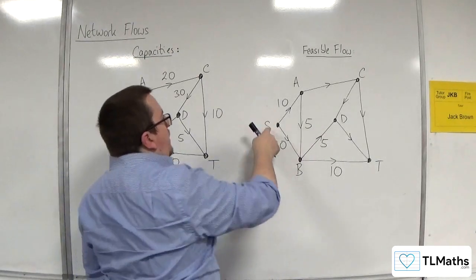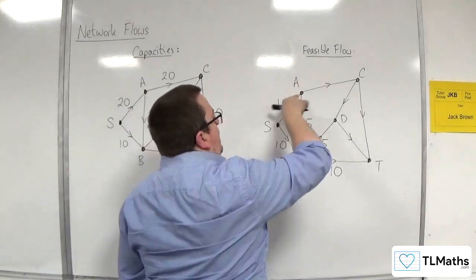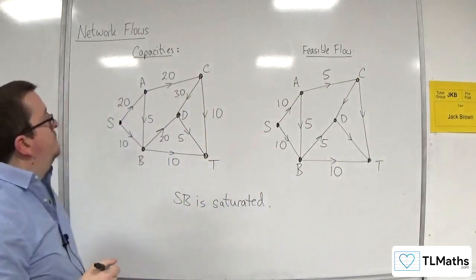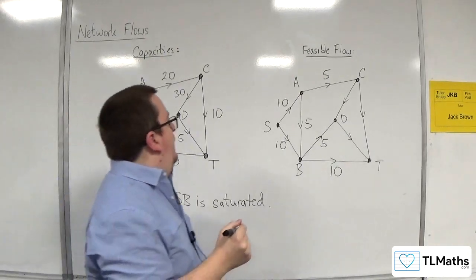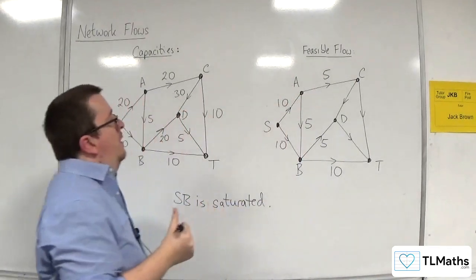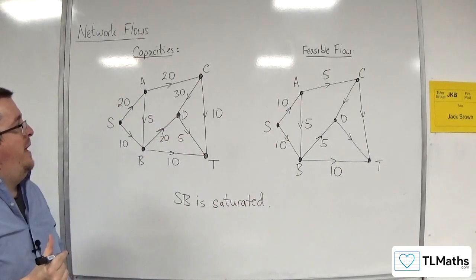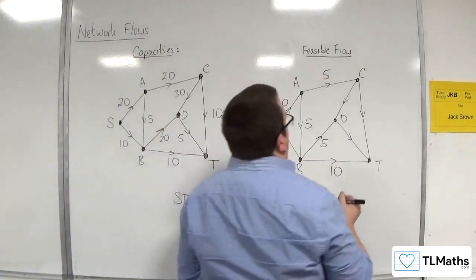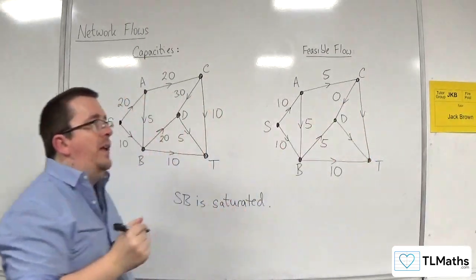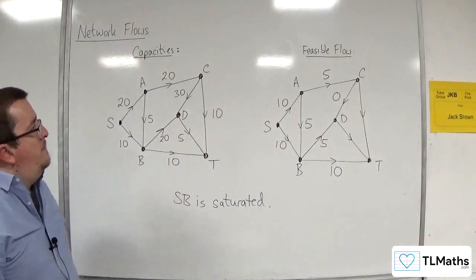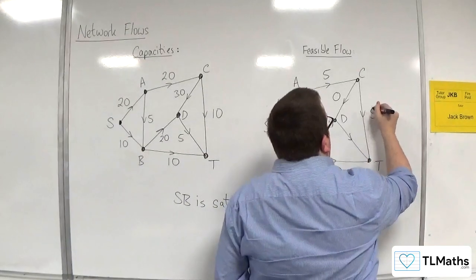But if 10 is going in there, 5 is coming out, then I've got to have 5 going along A to C. Let's say, as I've got 5 going into C, I could have none going through CD and 5 going through CT.